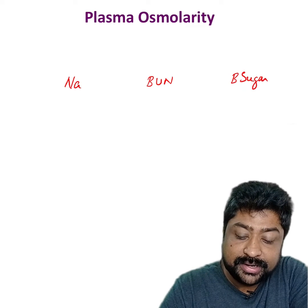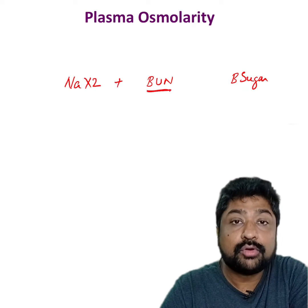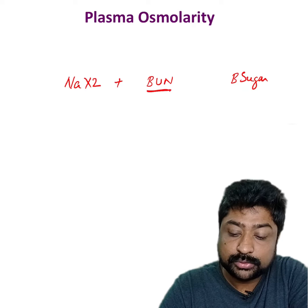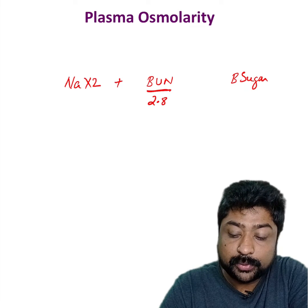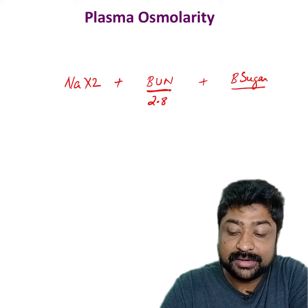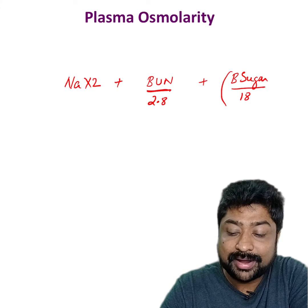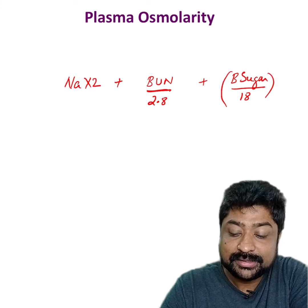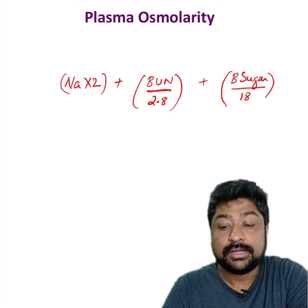We take the value of sodium and multiply it by 2. We take the value of blood urea nitrogen and divide it by 2.8, and we take the value of blood sugar and divide it by 18. Whatever value we get, that is your plasma osmolarity level.